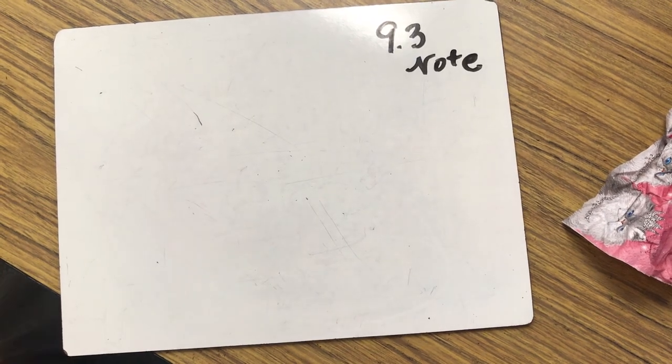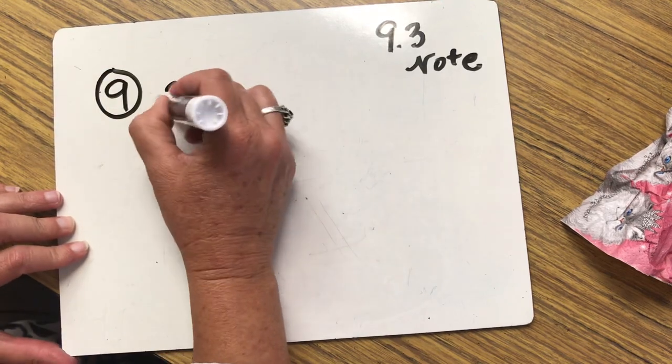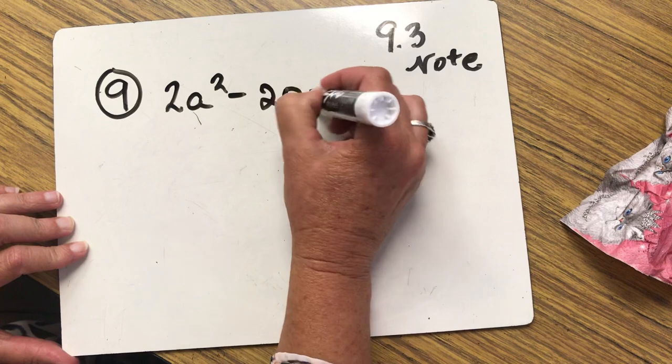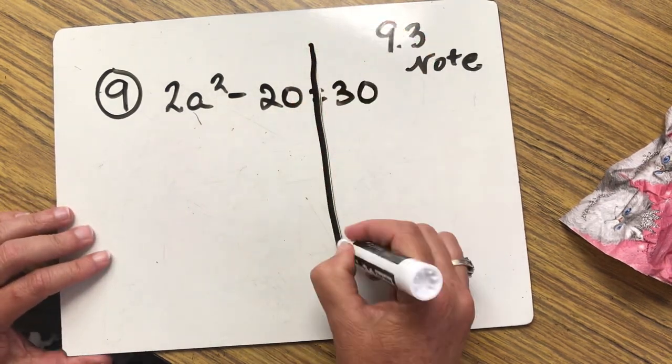Welcome back to your 9-3 notes. We are on question number 9. We have 2a squared minus 20 equals 30. Most important, we need to definitely draw that line.